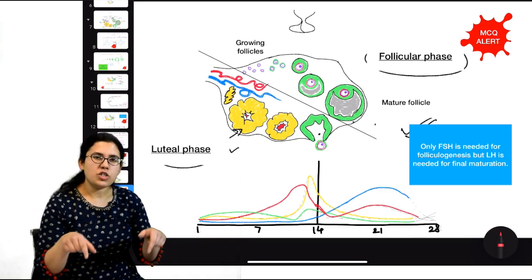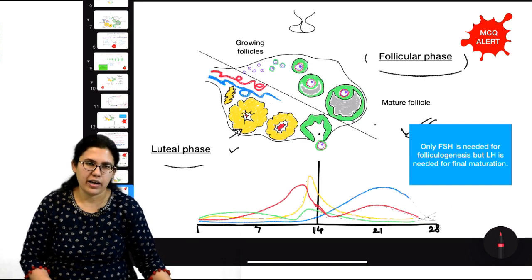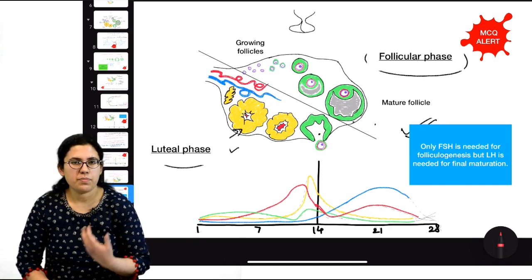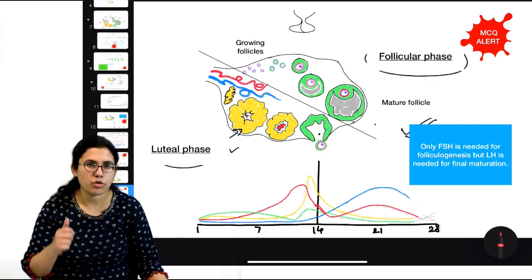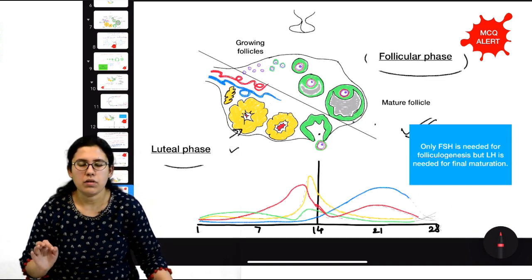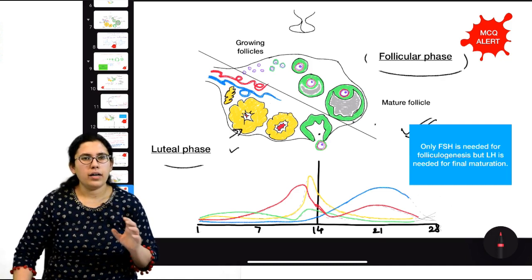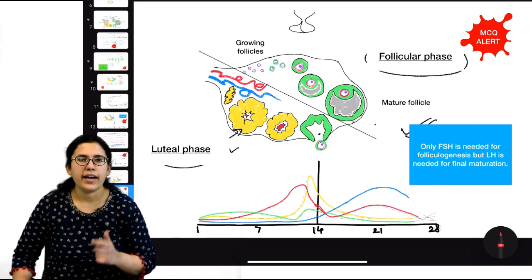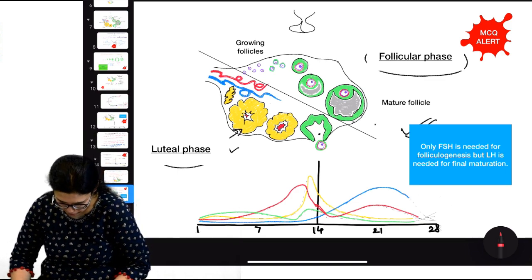This newly formed structure, under the effect of LH, forms a very special hormone required in the luteal phase — progesterone. This structure is now called the corpus luteum. Corpus luteum is formed under the effect of LH in the luteal phase and produces progesterone.